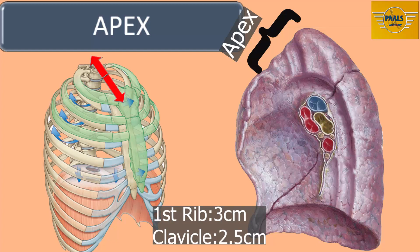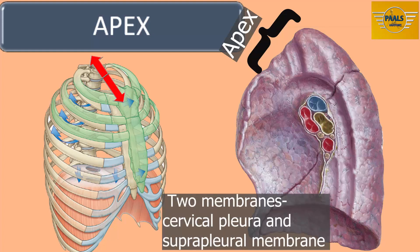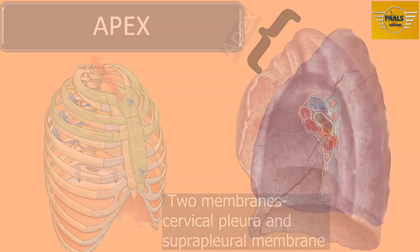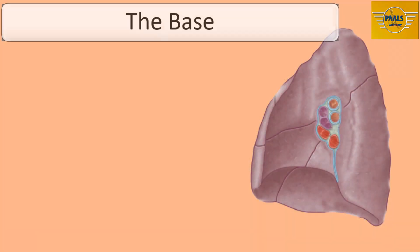The apex is about 3 cm superior to the anterior end of the first rib and 2.5 cm above the medial one third of the clavicle. This part of the lung is lined by two membranes: the cervical pleura and the suprapleural membrane.